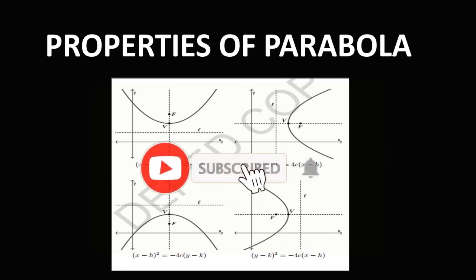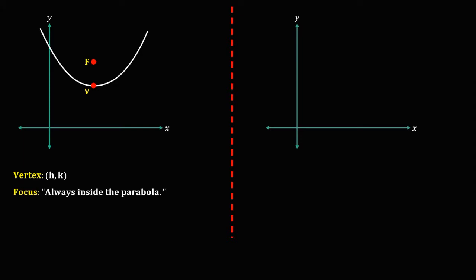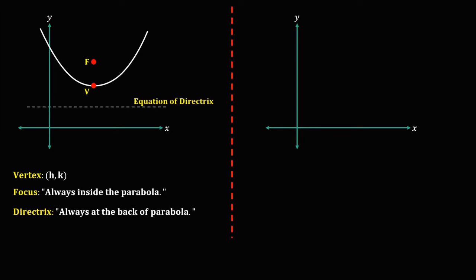Welcome to MathStoria. Let's look at the properties of a parabola. If the parabola opens upward, we have two key points. The vertex is labeled h and k. The point inside the parabola is the focus — the focus is always inside the parabola. The line at the back of the parabola is the equation of the directrix — the directrix is always at the back of the parabola. And this line is the axis of symmetry.